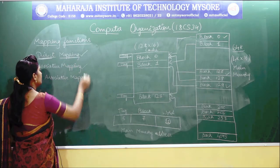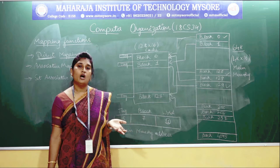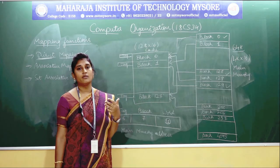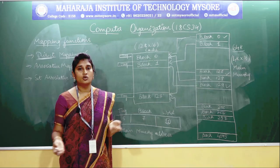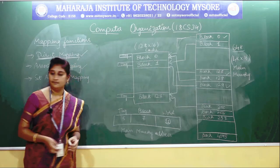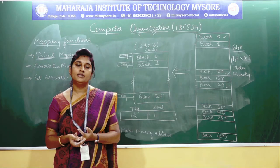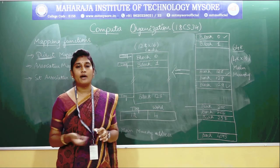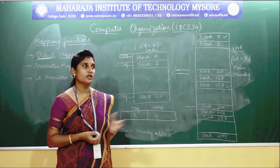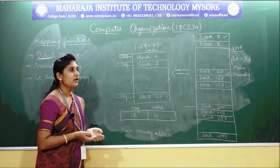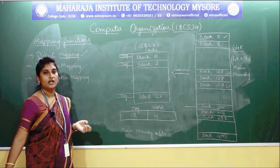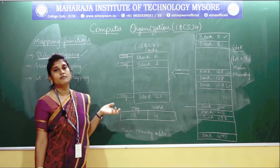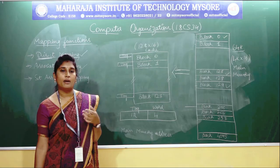The next type of technique is associative mapping. How will the associative mapping technique work? How will you move contents from main memory to cache memory? Before looking at it, why have we shifted to associative mapping? Why did we not continue with direct mapping? There are some flaws found in the direct mapping technique.